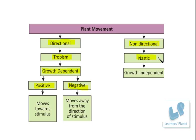On the other hand, nastic movement is non-directional — it is independent of the direction from where the stimulus is coming. In this case the movement may be growth dependent or it may be growth independent. Growth independent means growth may or may not occur — both possibilities are there. But it is never dependent on the direction of the stimulus or completely on growth.